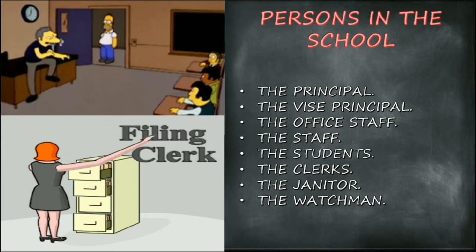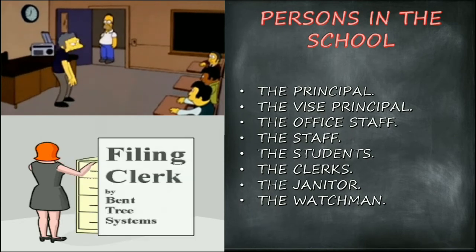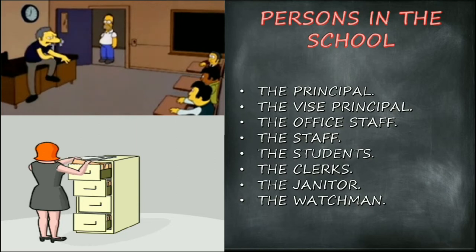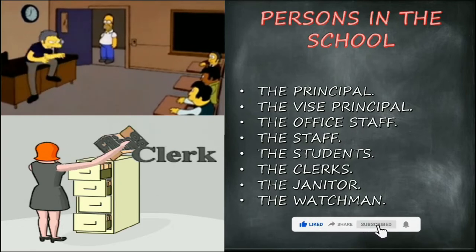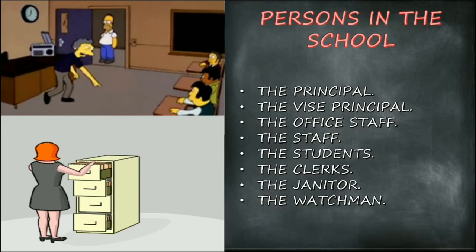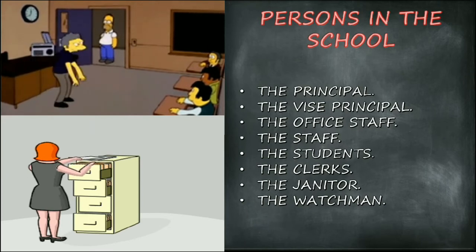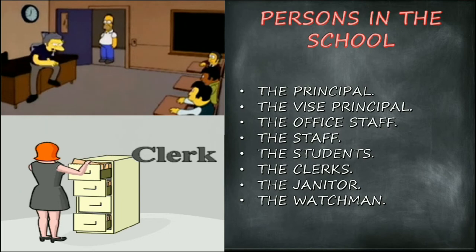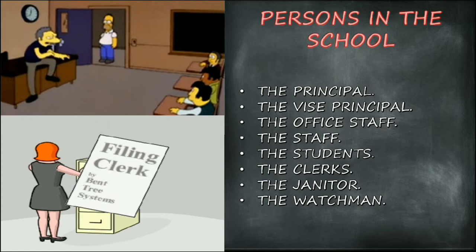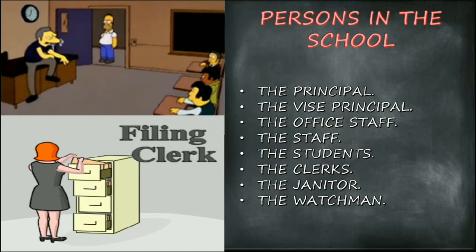The office staff guide children to their respective classrooms and take care of the administrative side, while also helping children with their various needs. The teaching staff are the teachers who take classes for students. The non-teaching staff — like the games master, music master, and drawing master — take care of co-curricular activities. Students are those who go to school to learn. Clerks send circulars to each class and collect leave letters. The janitor takes care of garden areas and restroom facilities. The watchman opens and closes the gate and allows parents to enter if necessary.